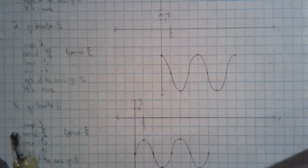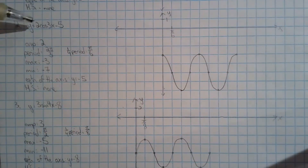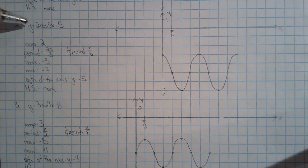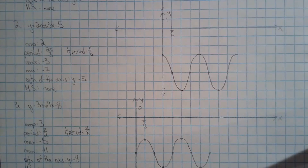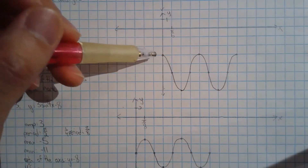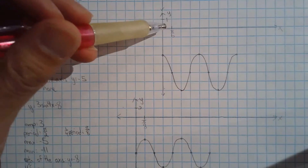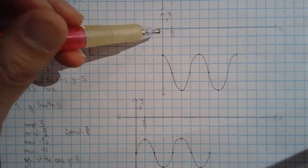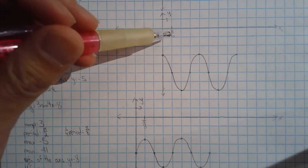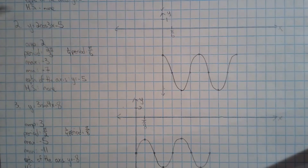For the next question, we have a vertical translation — that's the only thing different about this question compared to the first. This one is a regular cosine wave. When I plot those five points, it's going to start at a maximum this time instead of a minimum. Scale the y-axis using the max and min values and then scale the x-axis. The logic is exactly the same as question one — the scaling for the x-axis is still the quarter period since there's no horizontal shift. Plot the five points and then repeat the pattern for two cycles.